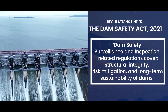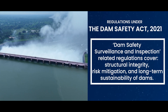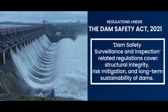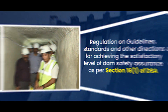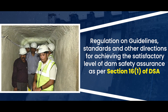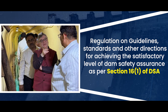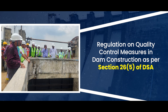Dam Safety Surveillance and inspection related regulations set the framework for achieving structural integrity, risk mitigation and long-term sustainability of dams. These include guidelines, standards and other directions for achieving the satisfactory level of dam safety assurance, guidelines and checklists for dam inspections, and quality control measures in dam construction.